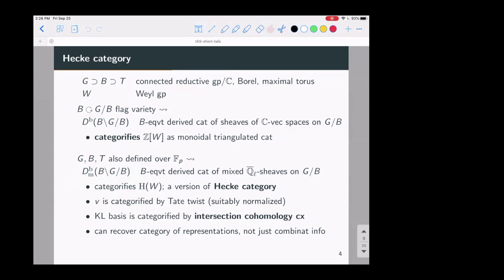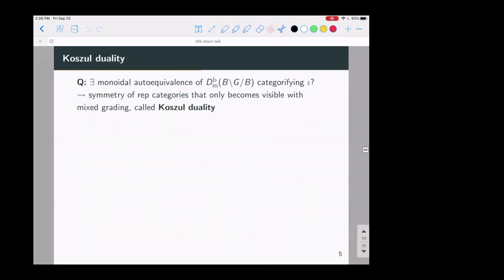And I said before that the Kazhdan-Lusztig basis or the p Kazhdan-Lusztig basis gives you combinatorial information about representation theory. But now here you have a category, much more than just an object. And so you can actually recover from this category, actual categories of representations. So one natural thing you could ask is, is it possible to categorify the symmetry, the ring involution that I wrote down earlier?